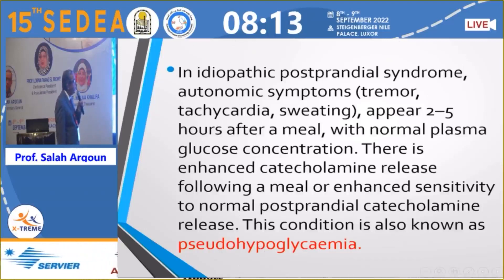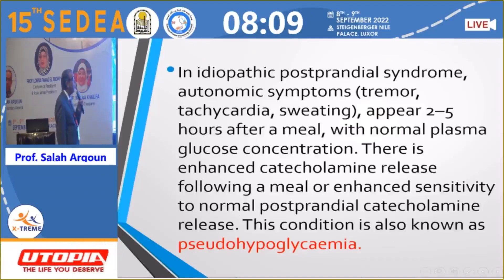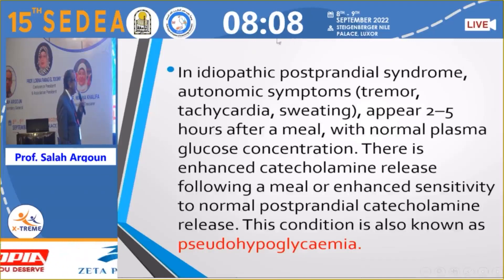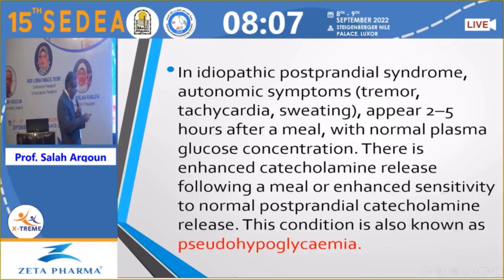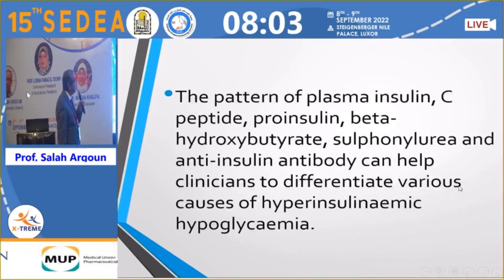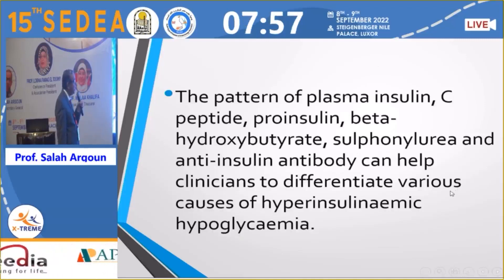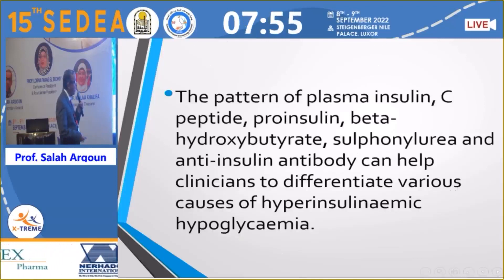Enhanced catecholamine release following a meal, and enhanced sensitivity to normal post-prandial catecholamine release, contribute to symptoms. The pattern of plasma insulin, proinsulin, beta-hydroxybutyrate, sulfonylurea screening, and anti-insulin antibody can help the clinician differentiate the various causes of hyperinsulinemic hypoglycemia.